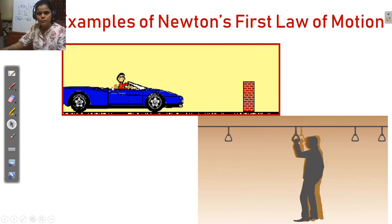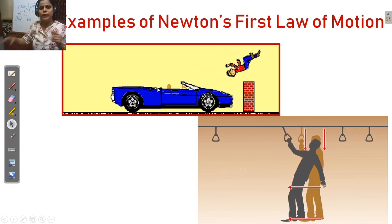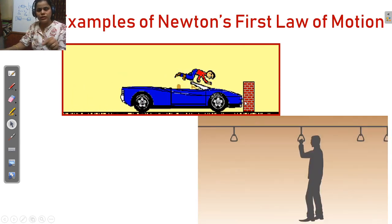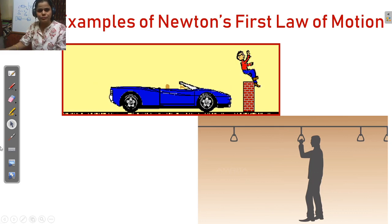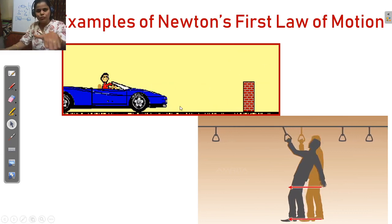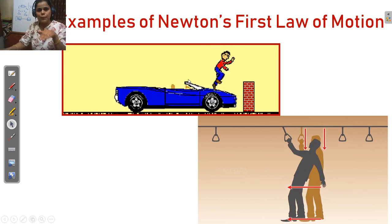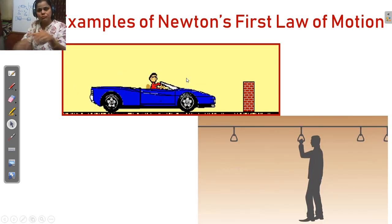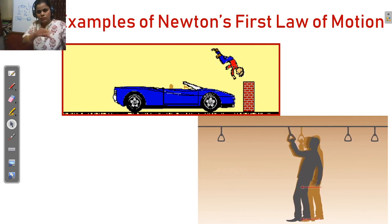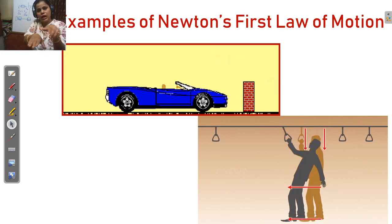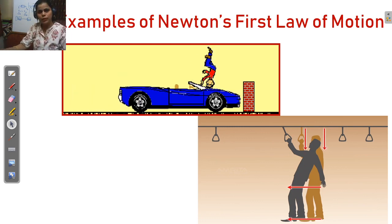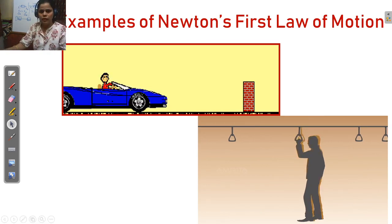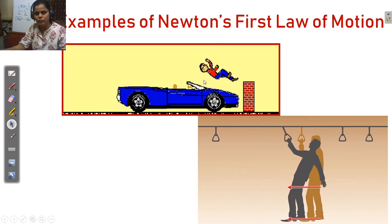Here is an example: this car moves with uniform velocity. When the car strikes a wall or obstacle, the person falls forward. When the car applies brakes, the body part in contact with the seat stops, but the upper body part continues to move forward — so the person falls to the front side.